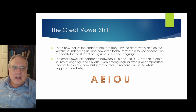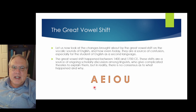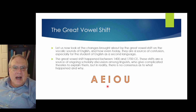These shifts are a source of ongoing scholarly discussion among linguists who give complicated theories to explain them, but in reality there is no consensus as to what happened and why. Before the Great Vowel Shift, the sounds for the vowels in the alphabet were: A, A, E, E, E, O, U. After the Great Vowel Shift: A, E, I, O, U.